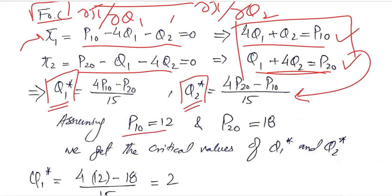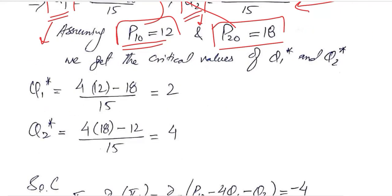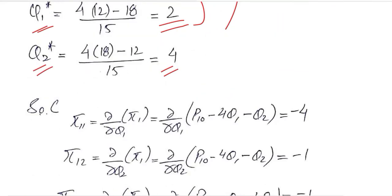If we assume that P₁⁰ is 12 and P₂⁰ is 18, then we can put these values here and get the answer of Q₁ and Q₂ in a numerical way. These critical values are now in numerical form once we substitute the values of P₁ and P₂.